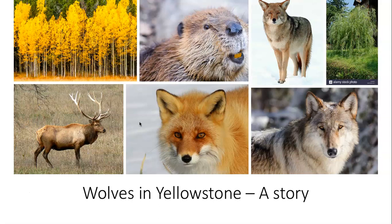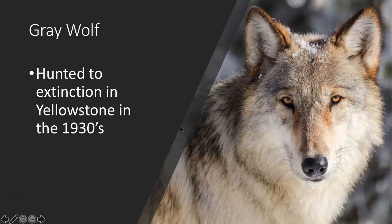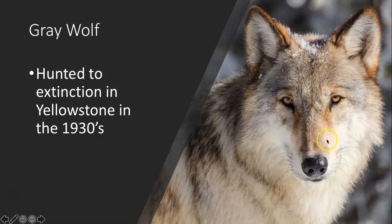Let's look at one story where we took out one individual from an ecosystem and it affected every other individual — the story of the gray wolf in Yellowstone National Park. It was hunted to local extinction, still existing in other parts of the world, but hunted to extinction in Yellowstone in the 1930s. The reason was that the government assisted in hunting them down because they were putting stress on cattle ranchers by taking down cattle.